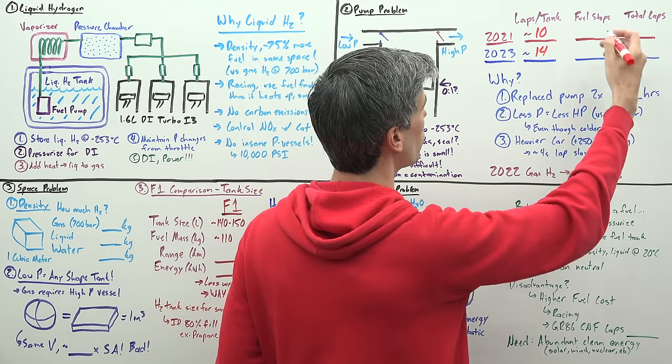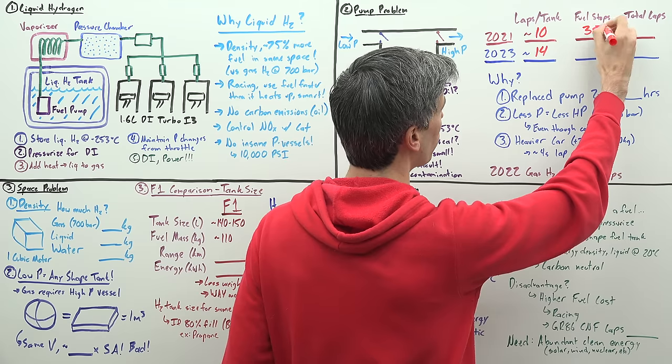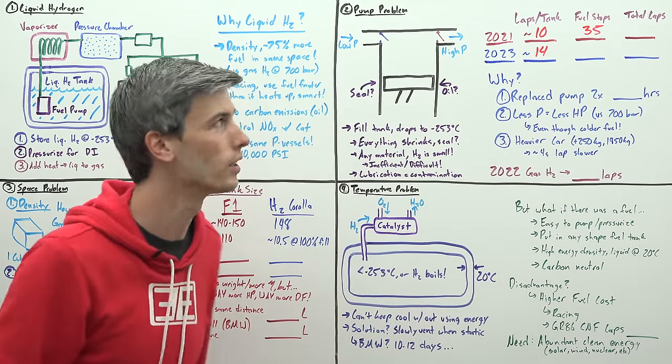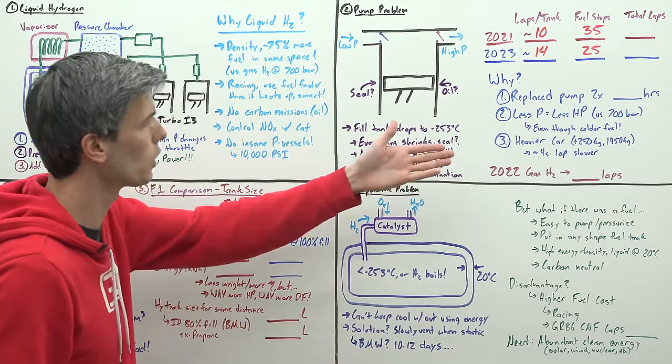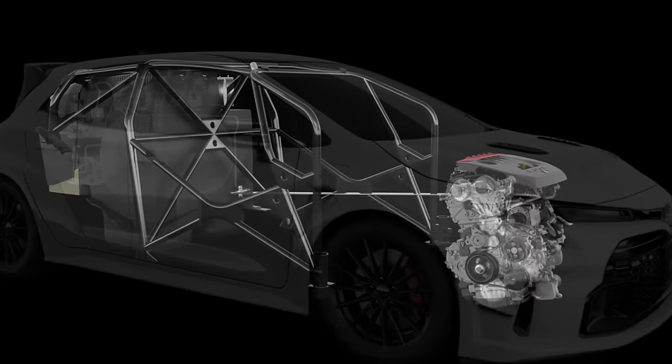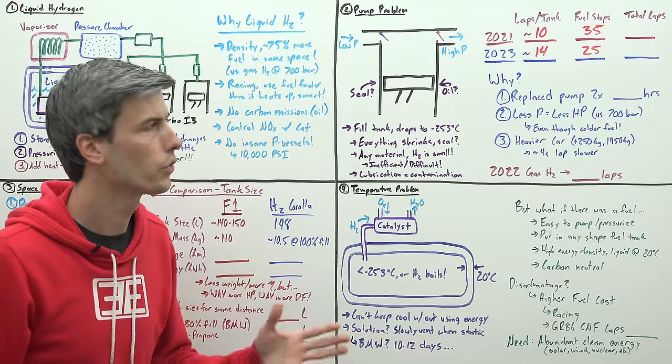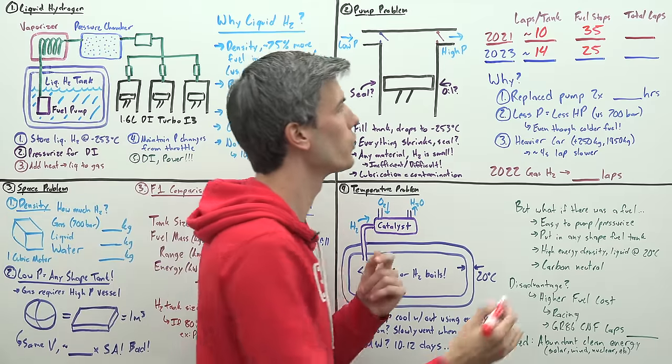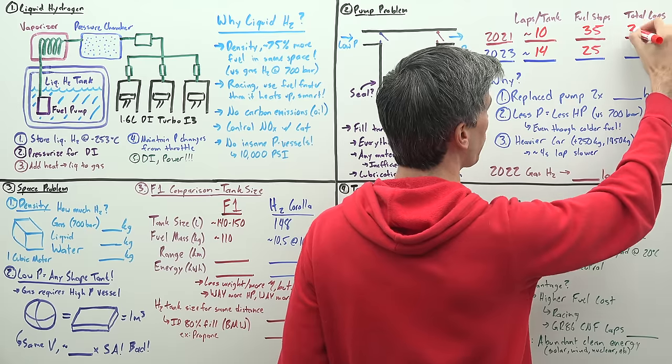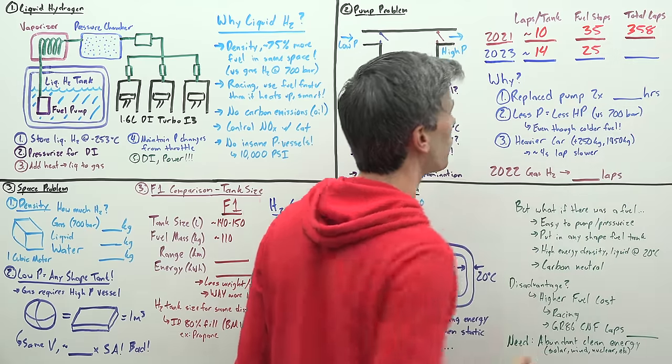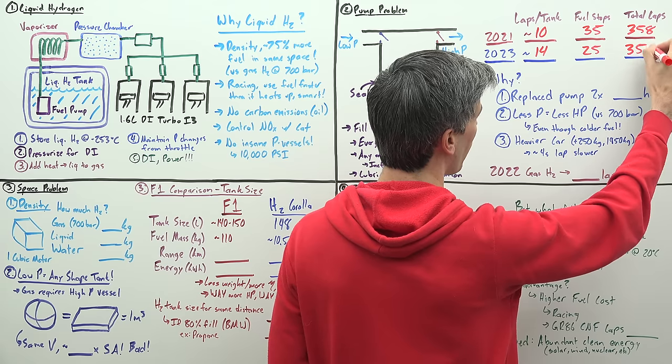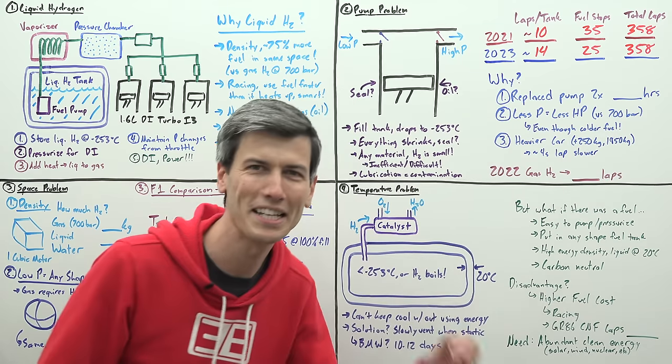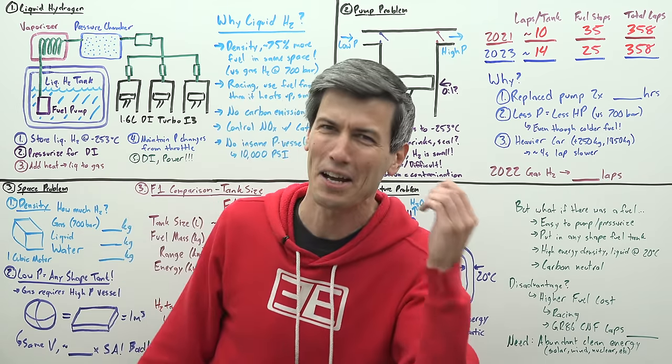In 2021 they had 35 fuel stops. In 2023 they had fewer, just 25 pit stops for fueling as a result of being able to travel longer since they had more hydrogen. So what were the total laps completed? In 2021 they completed 358 laps, and in 2023 using liquid hydrogen, 358 laps, the exact same number.